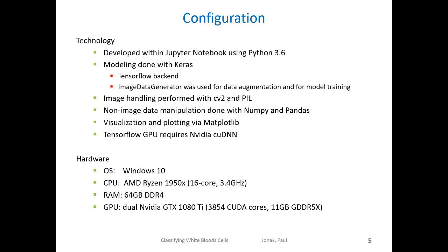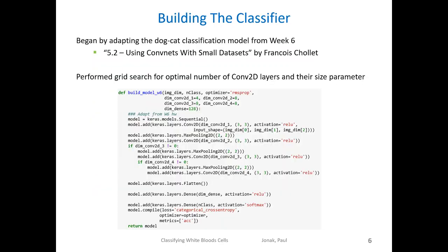I'm very lucky to have had a fairly powerful work computer to train these models on. In particular, the heavy lifting was done by two 1080 Ti GPUs. Before building any models, the course material was scanned for problems of a similar nature. As dogs and cats are merely a collection of cells, the dog-cat classifier built in week six seemed like an appropriate place to start. The model provided was built by Francois Chollet. We adapted his model by changing important parameters into variables and then performing a grid search to see which values would provide the best model.